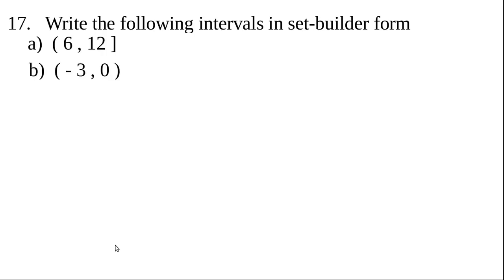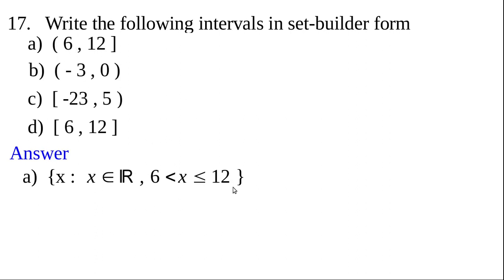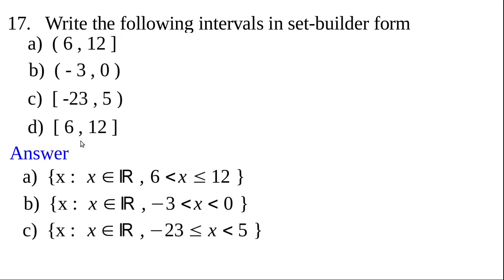Question 17: write the following intervals in set-builder form. Part A: open interval (6, 12] → {x : x ∈ ℝ, 6 < x ≤ 12}. Part B: (−3, 0) → {x : x ∈ ℝ, −3 < x < 0}. Part C: [−23, 5) → {x : x ∈ ℝ, −23 ≤ x < 5}. Part D: closed interval [6, 12] → {x : x ∈ ℝ, 6 ≤ x ≤ 12}.